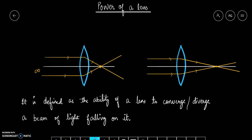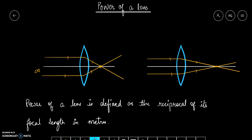So we define power as the ability of a lens to converge or diverge a beam of light falling on it. We can also define the power of a lens as the reciprocal of its focal length in meters. We can write it as P equals 1 upon F, where focal length has to be in meters only.